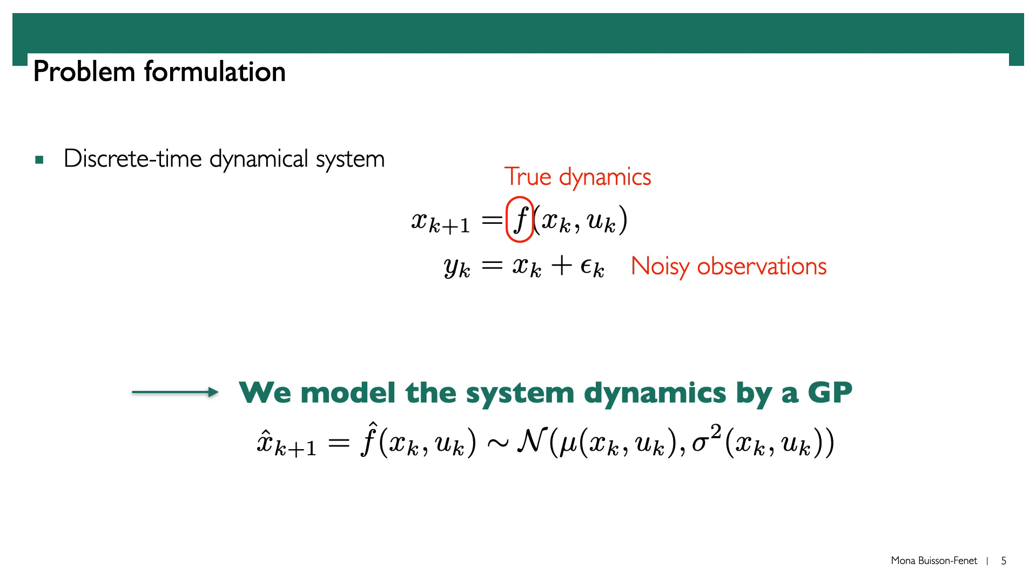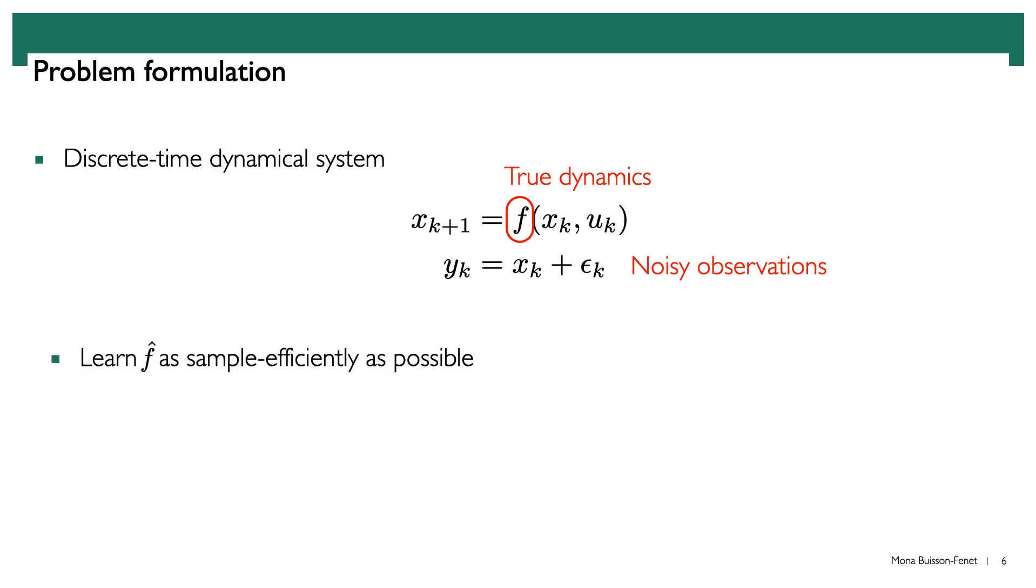So if we have a very high variance, that means we are very uncertain of what the next state will actually be. And our aim is to learn this model F-hat as efficiently as possible.